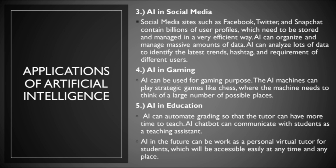Fourth, Artificial Intelligence in gaming — AI can be used for gaming purposes. AI machines can play strategic games like chess where the machine needs to think of a large number of possible moves. Fifth, Artificial Intelligence in education — AI can automate grading so that tutors can have more time to teach. AI chatbots can communicate with students as a teaching assistant, and in the future AI can work as a virtual tutor for students, accessible at any time and any place.